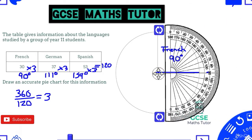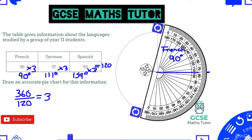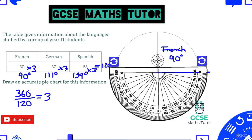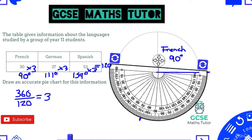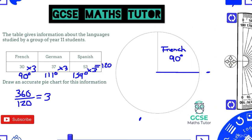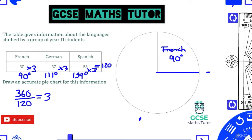Put the protractor back on the centre and rotate it so the zero is lined up with the new line, using the outside numbers. We need to measure 111°: past 90, past 110, 111 is just past that. Mark it, remove the protractor, and draw a straight line from the centre. Label that section 'German — 111°'.